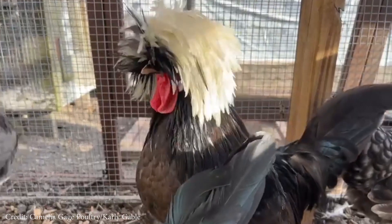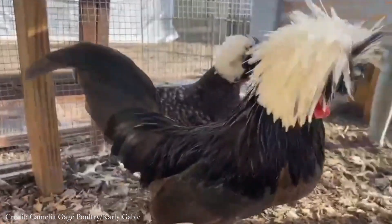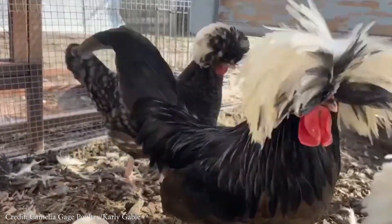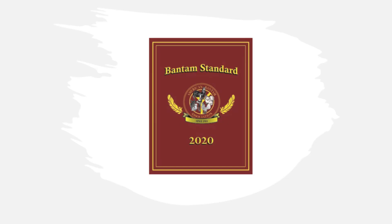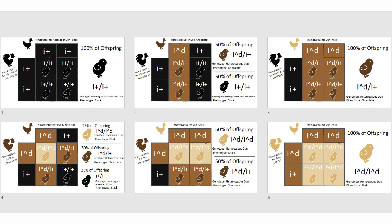In this video, we will be going over the names of the chocolate variety, the standard's description of chocolate, the genetics of Dunn, and six different Punnett squares related to the breeding of Dunn and Khaki.